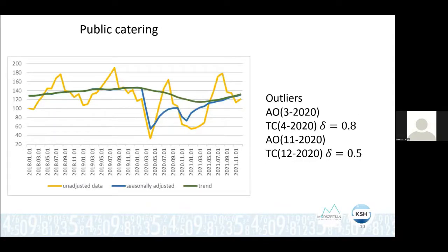This is my last example, to show that if there are more waves that have an effect on a time series, transitory change can give a good solution too. This is public catering — restaurants were restricted in the second and third waves as well. So it has an effect in the first wave, and also in the second and third waves together. I think this W-shape is something we would like to see in this situation, and I think we found a quite nice trend for this case.